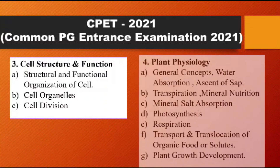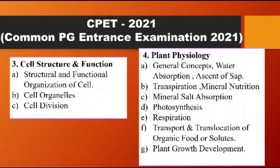The fourth point is Plant Physiology, which is a very rich and important topic in botany. First, look at general concepts: diffusion, osmosis, turgor pressure, imbibition, and water potential. Then study water absorption theories — root pressure theory, vital force theory, and physical force theory. Ascent of sap is also an important topic not to be left out.